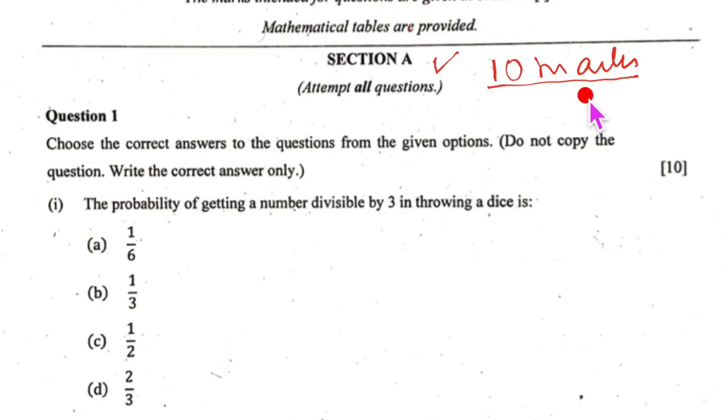Section A consists of 10 marks and it has 10 MCQs. So we have question 1, the first one. The probability of getting a number divisible by 3 in throwing a dice is.